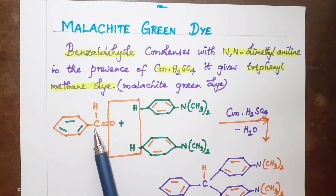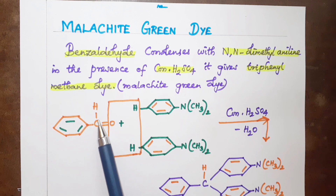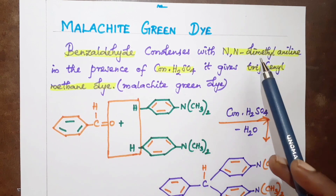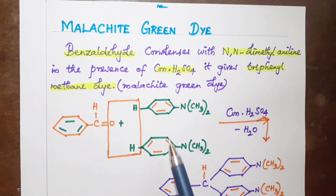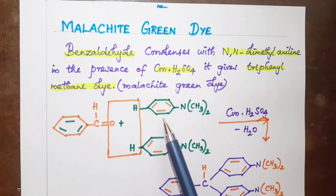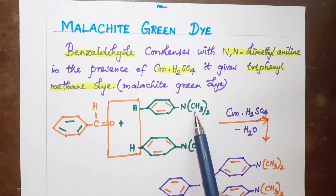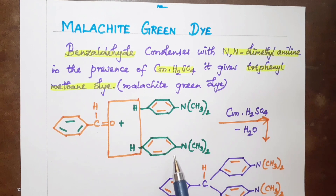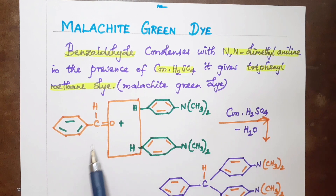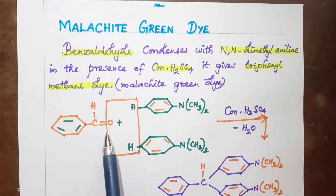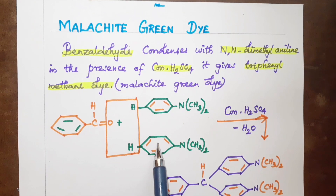The carbonyl group (C=O) reacts with NN-dimethylaniline. Aniline has the formula C6H5NH2, with two hydrogens replaced by two methyl groups to give NN-dimethylaniline. In the condensation reaction, the oxygen from benzaldehyde and a hydrogen form a water molecule as a leaving group.